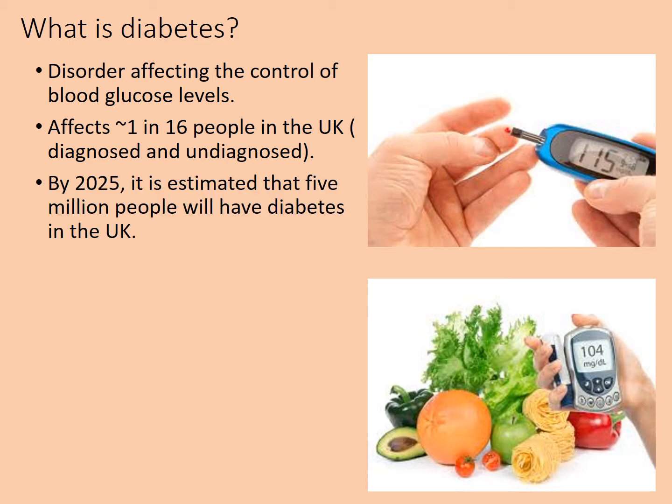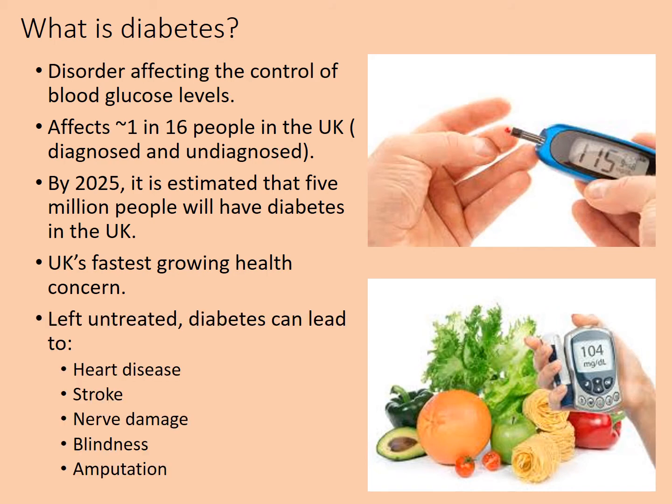It is estimated that in about four years' time, around five million people will have diabetes in the UK. It is the fastest growing health concern in the UK. Complications include increased risk of heart disease, stroke, nerve damage, blindness, and it is the biggest cause of non-emergency amputation in the western world. You don't need to write anything from this slide.